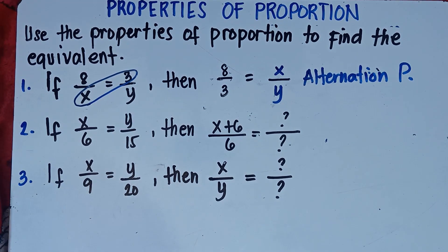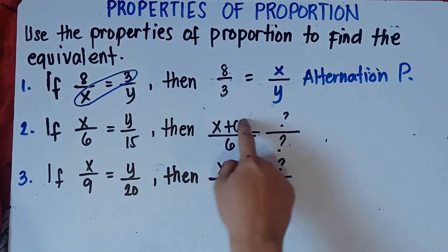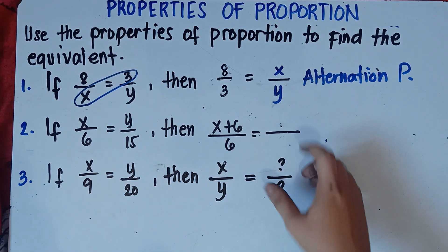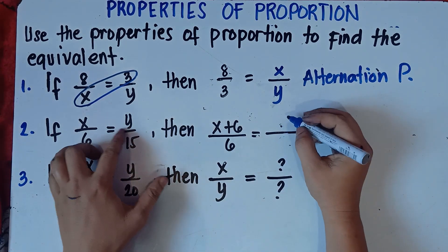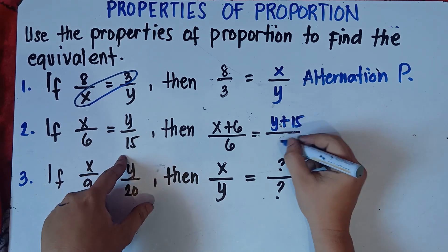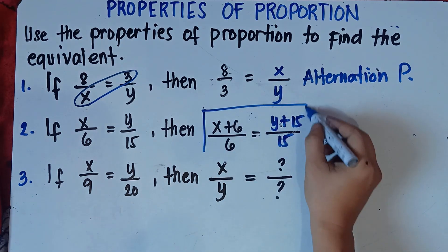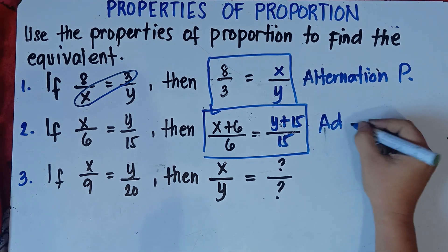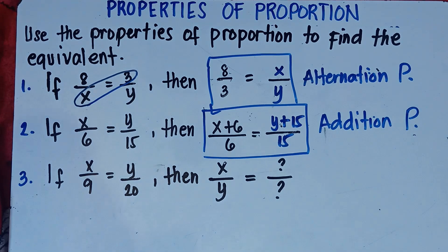Number 2: x over 6 equals y over 15, then x plus 6 over 6 equals what? We apply the addition property. The answer is y plus 15 over 15 — copy y, then add the denominator 15, then copy the denominator. That's the answer for number 2, addition property.